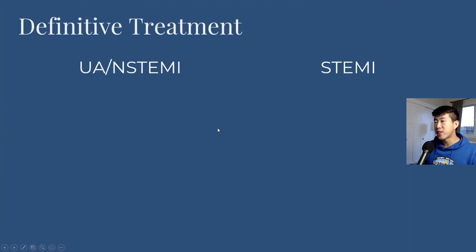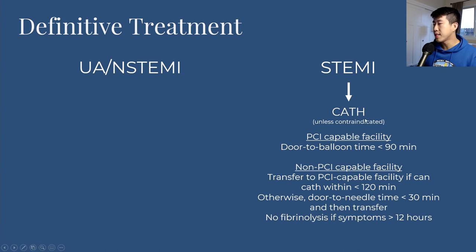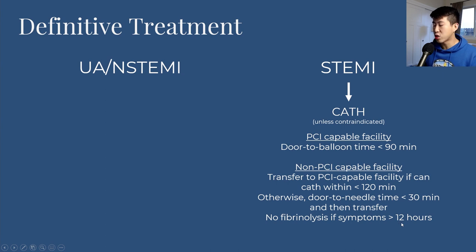For definitive treatment of STEMI, perform cardiac catheterization unless contraindicated. At a PCI-capable facility, the goal is door-to-balloon time less than 90 minutes. At a non-PCI-capable facility, transfer if you can arrive within 120 minutes; otherwise, the door-to-needle time for fibrinolytics like TPA should be less than 30 minutes. Fibrinolysis is contraindicated if symptoms have been present for greater than 12 hours.